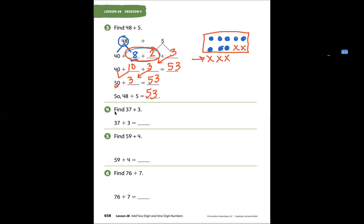Problem 4 says find 37 plus 3. Let's break it into expanded form: 30 plus 7. Bring down the 3 plus 3. 7 and 3 make 10. 30 plus 10 equals 40.